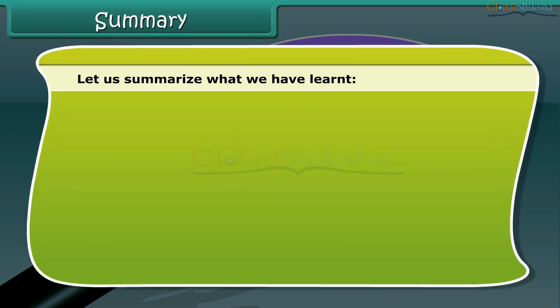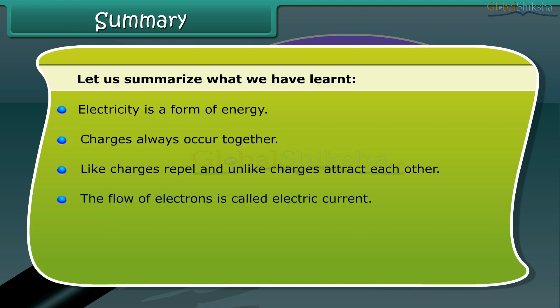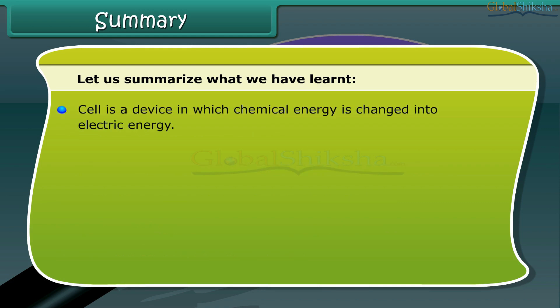Let us summarize what we have learned. Electricity is a form of energy. Charges always occur together — like charges repel and unlike charges attract each other. The flow of electrons is called electric current. Lightning is an electric discharge in the sky. Cells are sources of electric current.